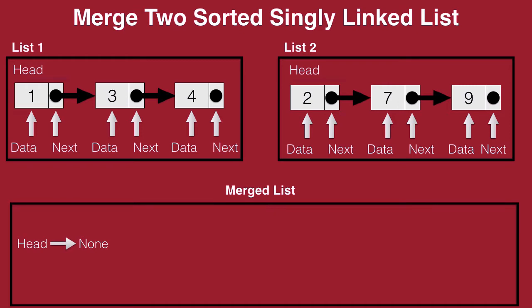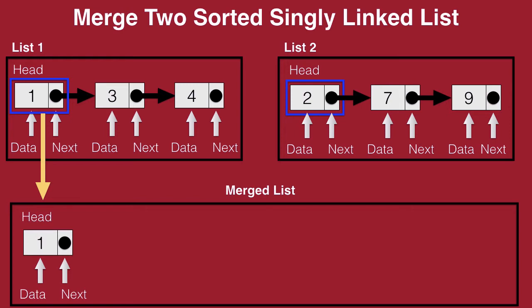We start traversing both these lists in parallel. We start from the head node of both the lists and then we check which among these two nodes has the lesser data. We see that list 1 has lesser data where 1 is less than 2. So, we bring down 1 into our new list. Our merged list now looks like this with the data 1. Once we bring down 1, we advance this node in list 1 to the next node. Next, we repeat the same process.